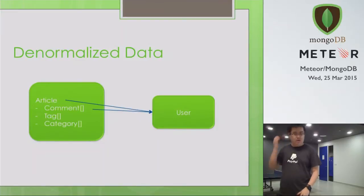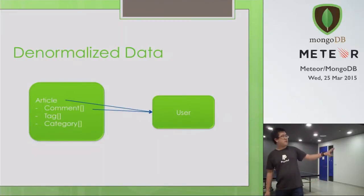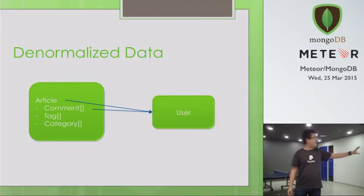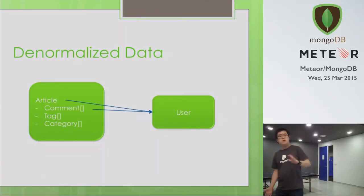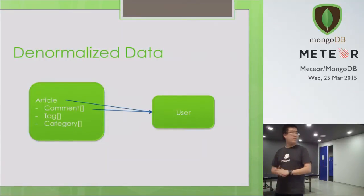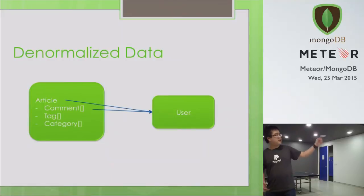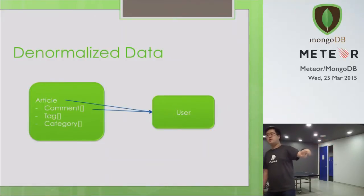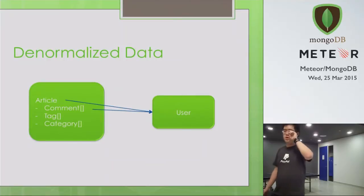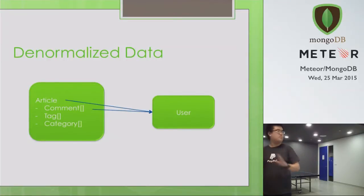This is how the denormalized set of data looks in MongoDB. In the article object, you have an array of comments, an array of tags, and an array of categories. In each of these comments, you reference a user. In each of the articles, you reference a user as well. So you basically store the user's ID.